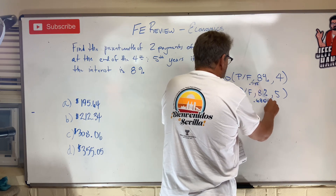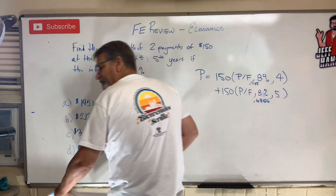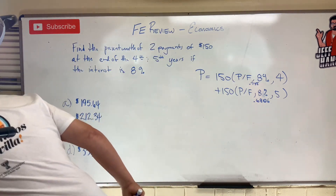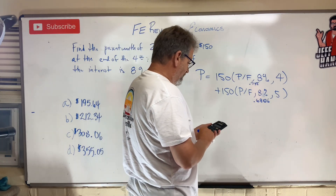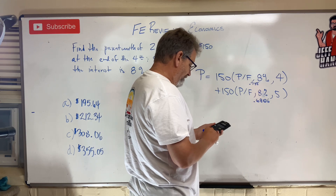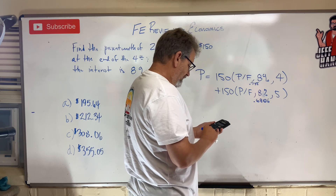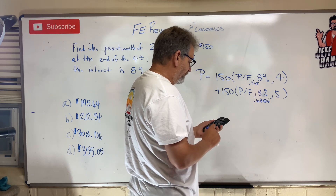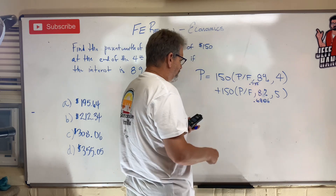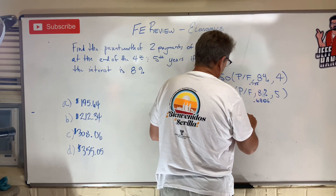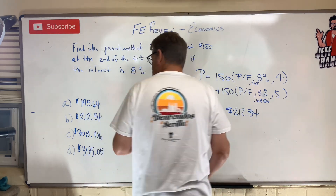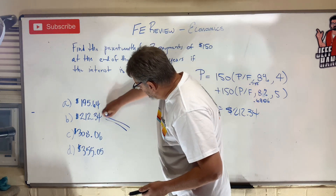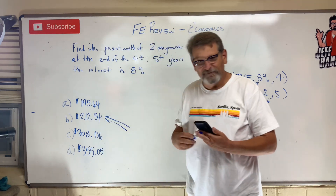Calculator time. 150 times 0.735, plus 150 times 0.6806 equals $212.34. Is that an answer choice? Oh yes — answer B!